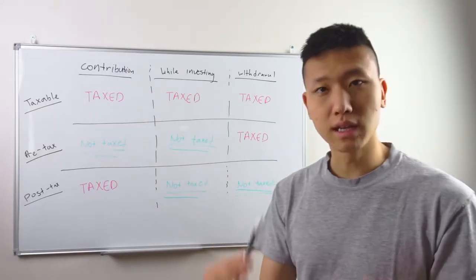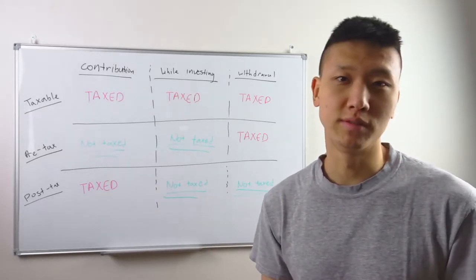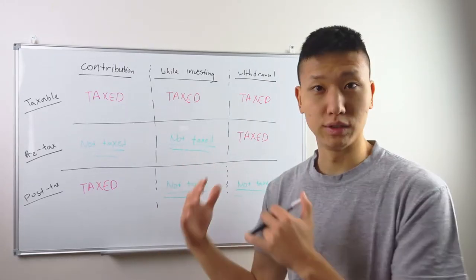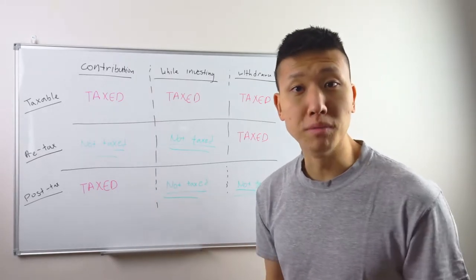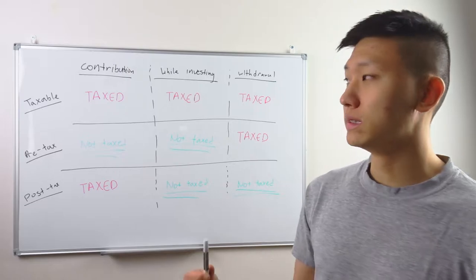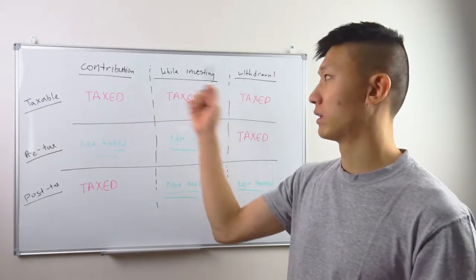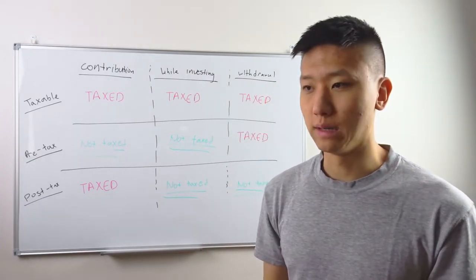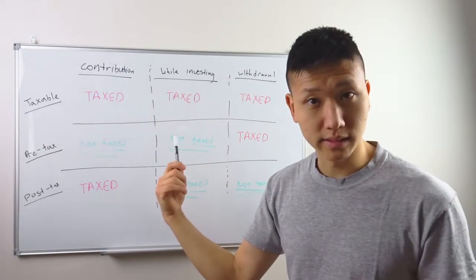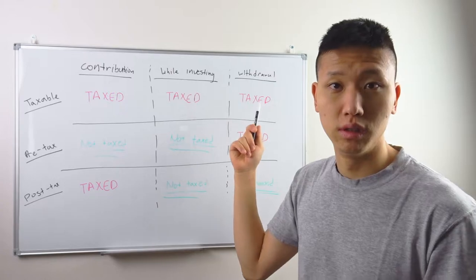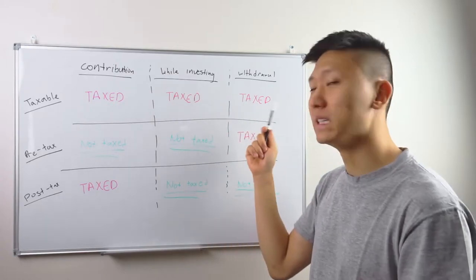The checkpoints — think of them like a toll gate where some vehicles don't need to pay. A lot of people in personal finance communities love retirement accounts because you can actually avoid paying taxes. There are three different checkpoints where you pay taxes: the contribution, while investing, and the withdrawal — the money coming into the account, staying in the account, and leaving the account.